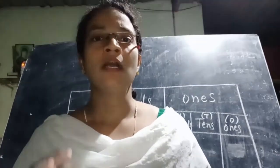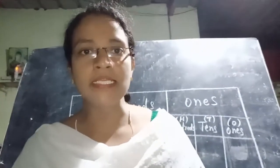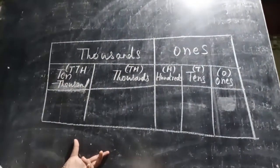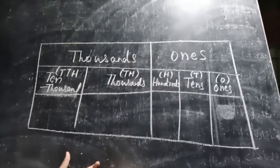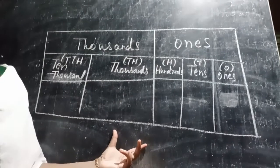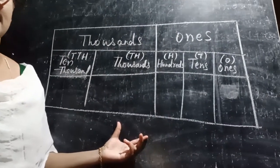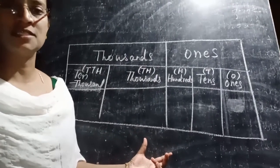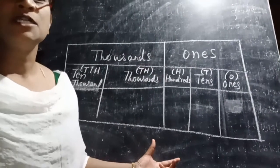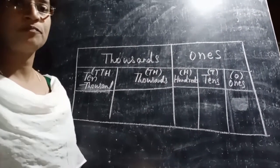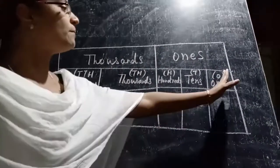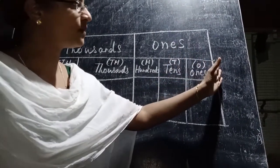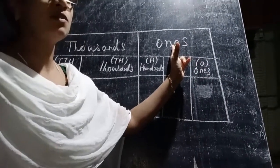First of all, let us study the Indian place value chart. In the Indian place value chart, a number is split into groups or periods. Starting from the right, the first period is the ones period.